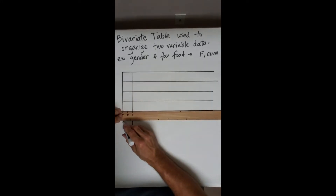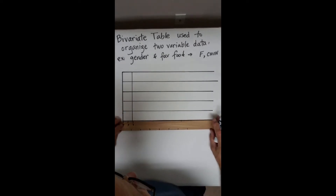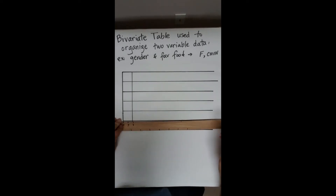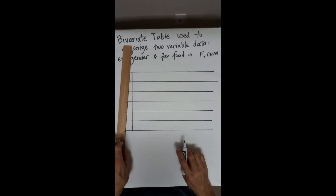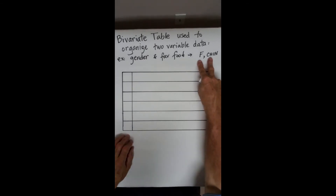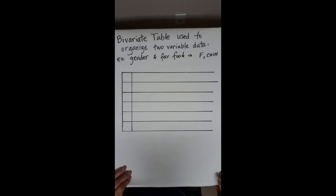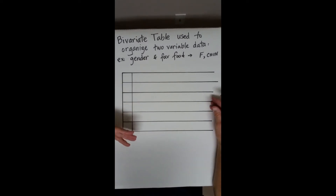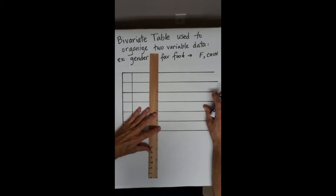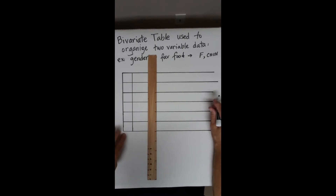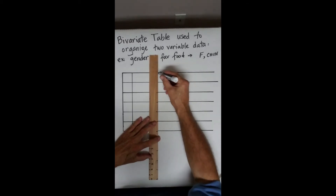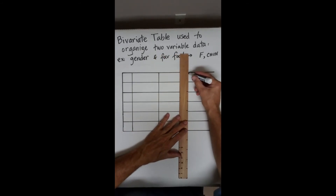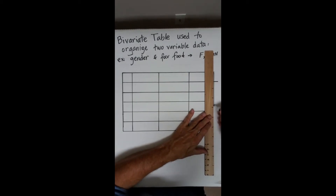Let's say we have five different foods. Suppose you had a party with males and females at a buffet, and as each person was leaving you asked them what they liked. A lady might say she liked the Chinese food, a guy says he liked the Mexican food, another guy liked the Chinese food. Each person gives their gender and their food preference. We're going to put the foods down the left-hand side and gender across the top.